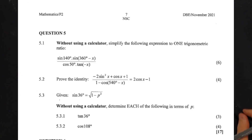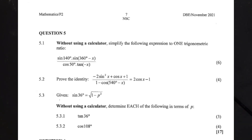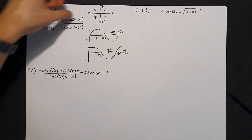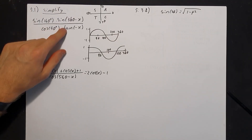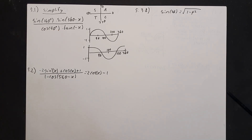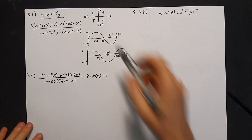Let's have a look at question five, which deals with trigonometry. Question 5.1 says: simplify without the use of a calculator the following to one trigonometric ratio. They've given you sine of 140 times sine of (360 minus x), over cos of 50 times tan of negative x.